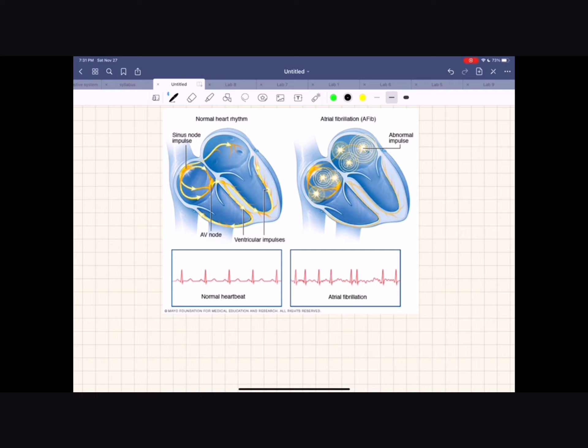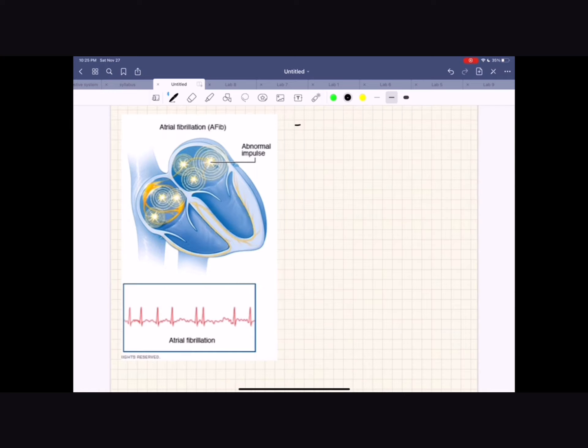One example of this is atrial fibrillation. The normal range for a heart rate is 60 to 100 beats per minute, but the heart rate of a patient with atrial fibrillation may range anywhere from 100 to 175 beats per minute. During atrial fibrillation, the signals from the SA node in the upper chambers of the heart are chaotic, resulting in the upper chambers shaking and quivering in motion.